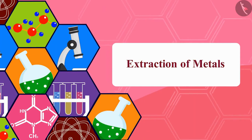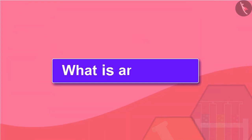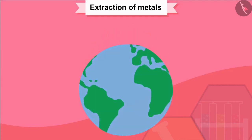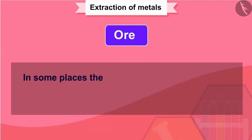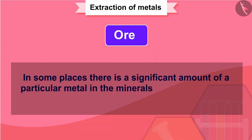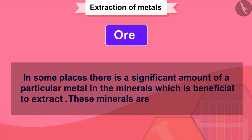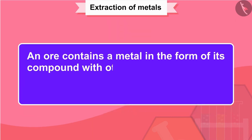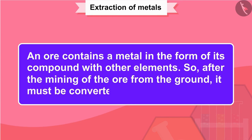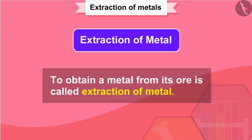The topic that we are going to cover in this session is extraction of metals. Before we move ahead with our discussion of extraction of metals, we must know what is an ore. Naturally found elements or compounds in the earth's crust are called minerals. In some places, there is a significant amount of a particular metal in the minerals, which is beneficial to extract. These minerals are called ores. An ore contains a metal in the form of its compound with other elements. After the mining of the ore from the ground, it must be converted into pure metal. To obtain a metal from its ore is called extraction of metal.